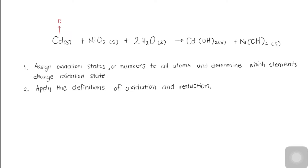Now let us begin assigning oxidation states starting with the reactants. Cadmium has zero, nickel is positive four, oxygen is negative two, hydrogen is positive one, and oxygen is again negative two. For certain elements, we have fixed oxidation states, just like for oxygen and hydrogen.